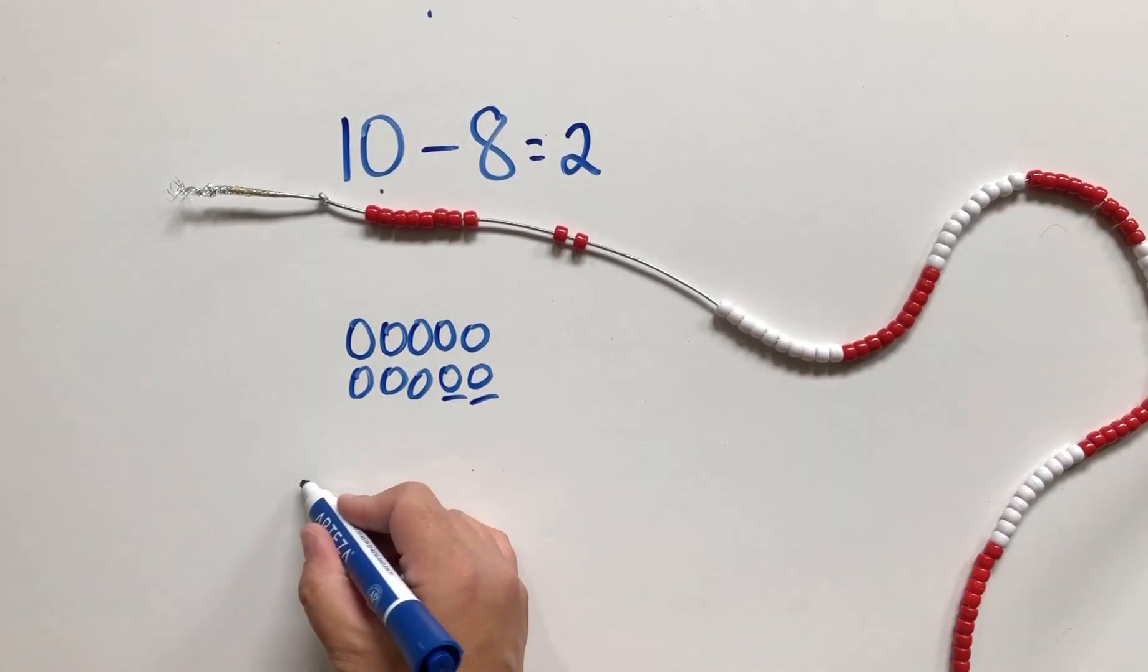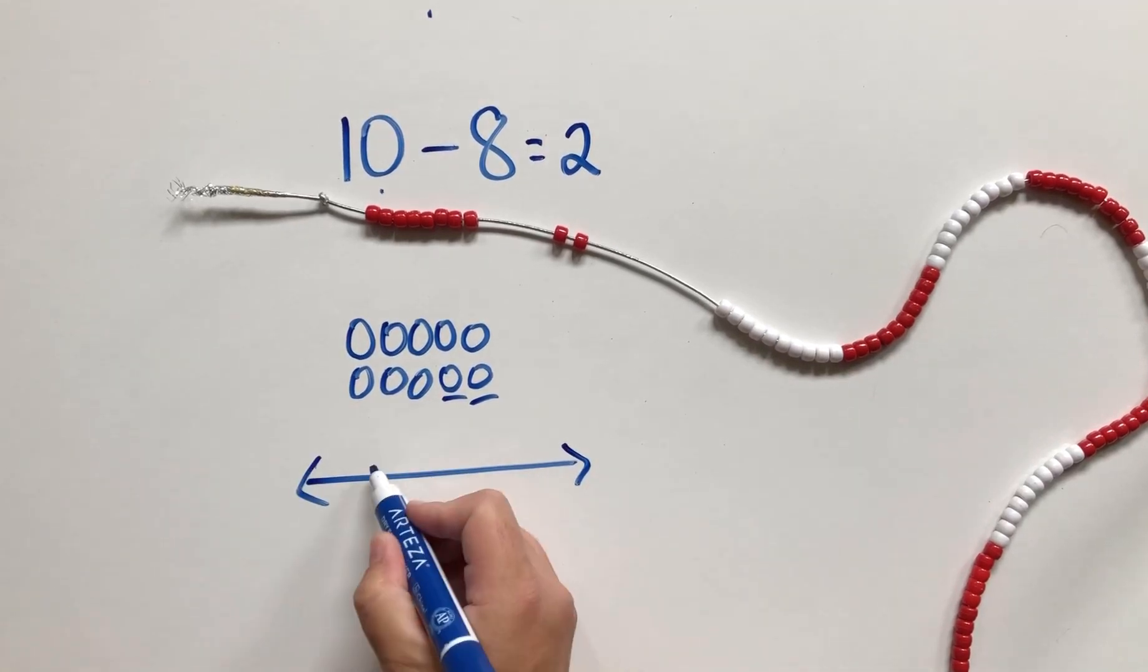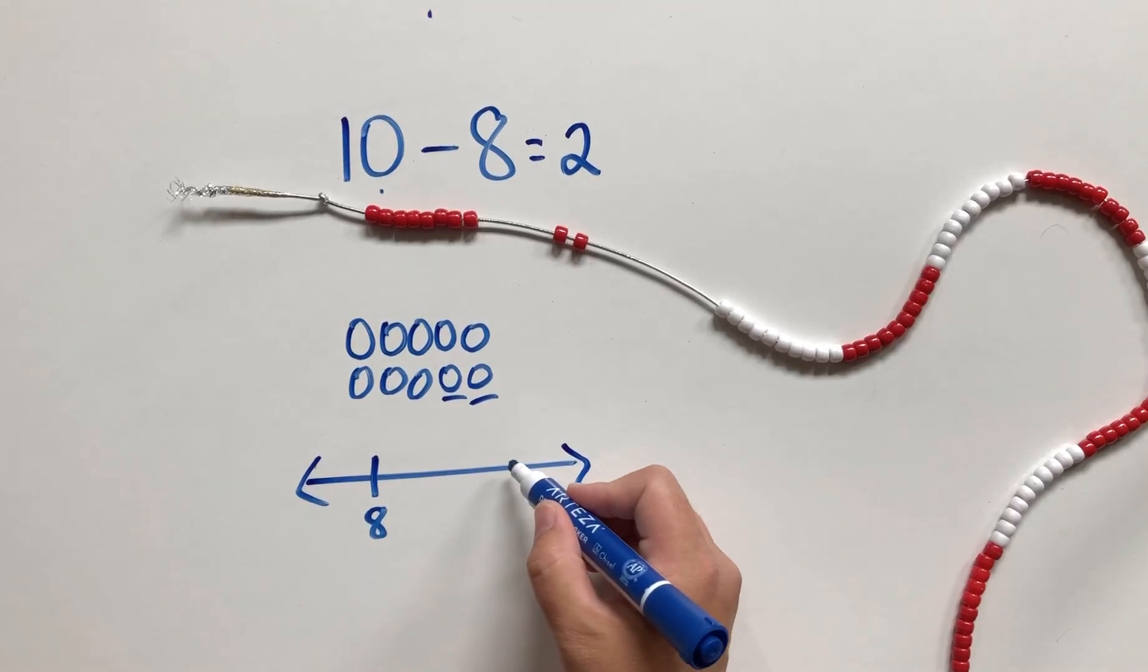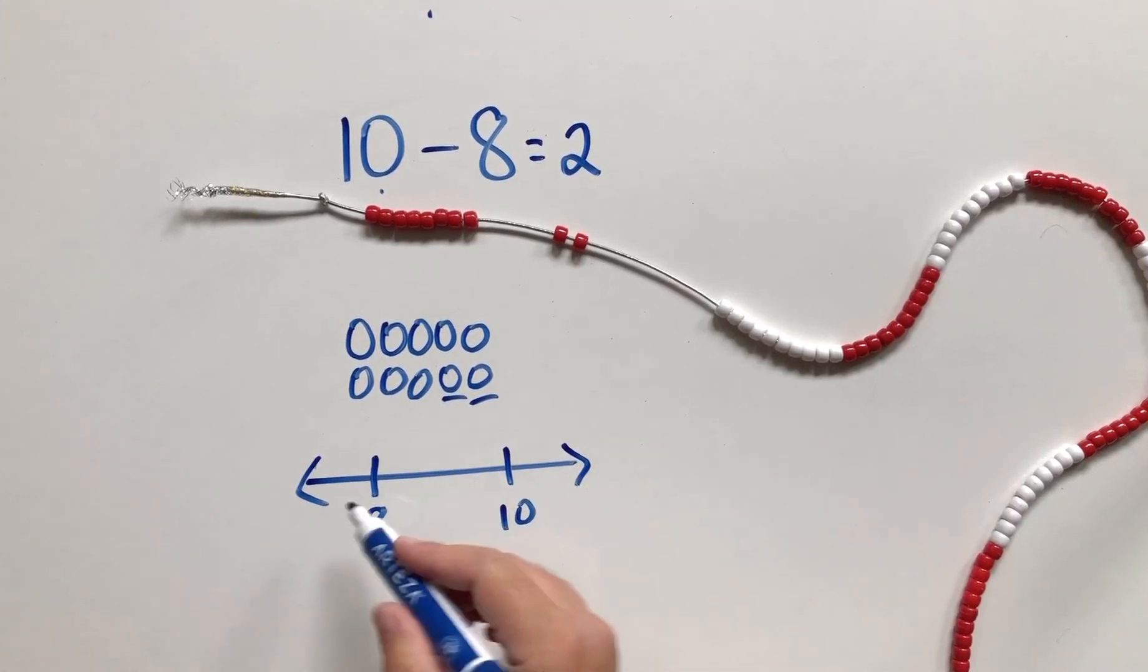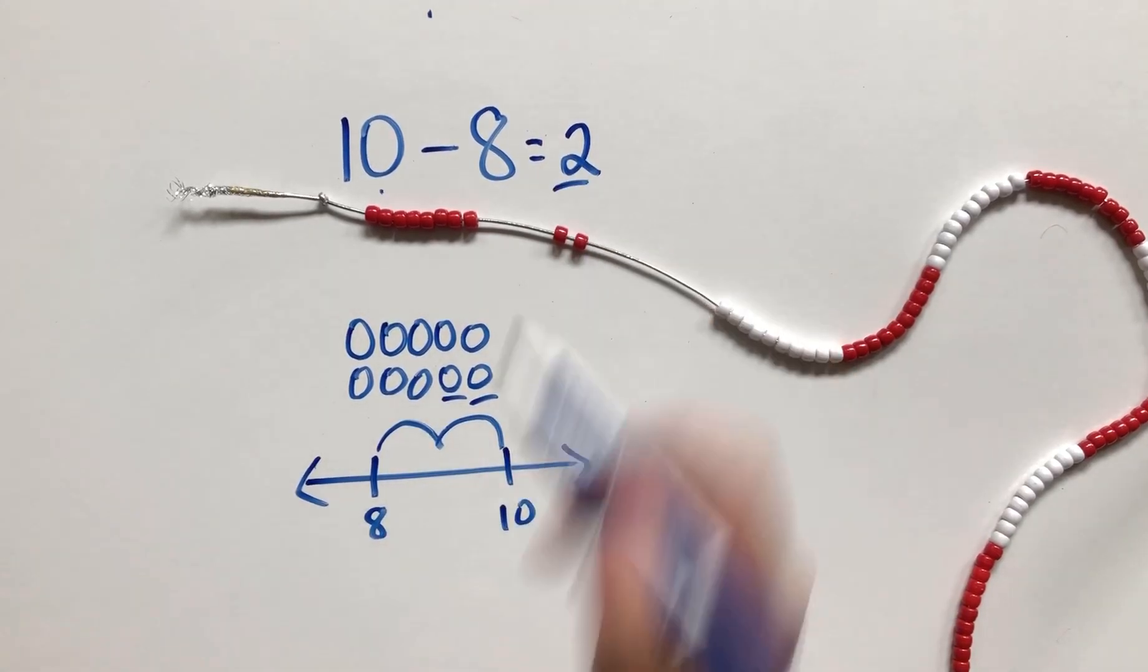We could also use a number line, which is one of my favorite ways to do counting up. So we're just going to start with 8. Now, how many more do we need to get to 10, or how many are in between? What's the difference? 9, 10. So we made two jumps, so the difference is two.